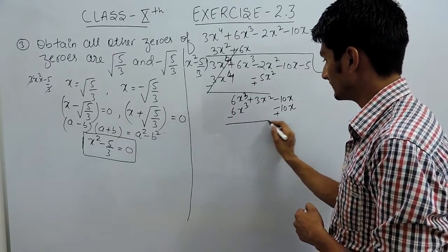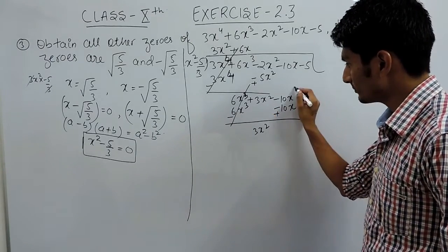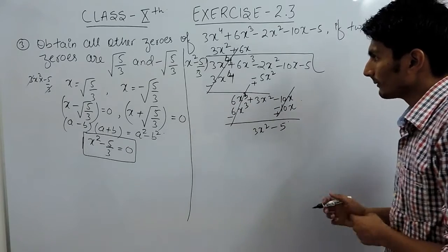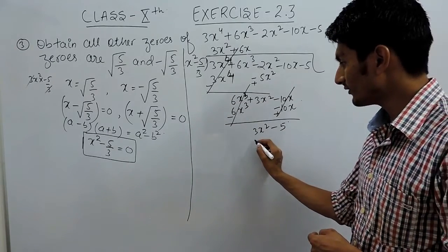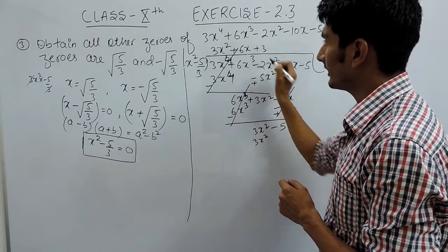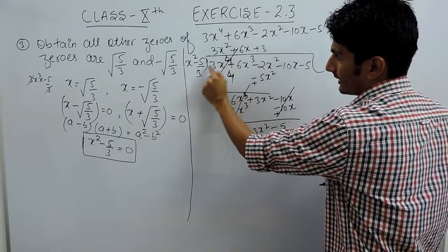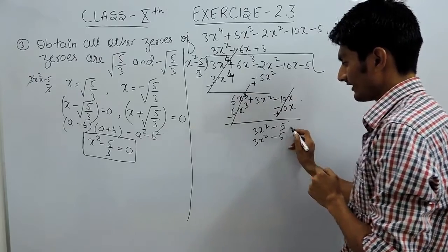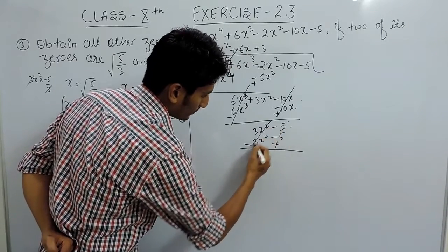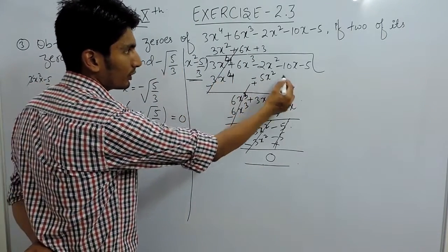The -5 is copied down. To make 3x² from x², we multiply by 3, giving 3x². Then 3x² multiplied by (-5/3): the 3s cancel, giving -5. After subtracting with sign change, the positive and negative values cancel out, so the remainder is 0. This confirms x² - 5/3 is indeed a factor, and the quotient is 3x² + 6x + 3.